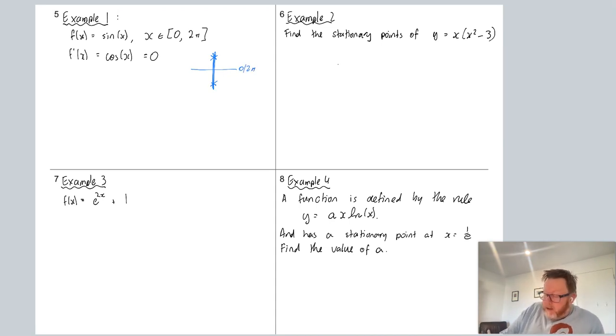So we can state pretty quickly that x is equal to π/2, that's this one here, or 3π/2, which is this one here. This is where the coordinates on the unit circle for cosine is zero.